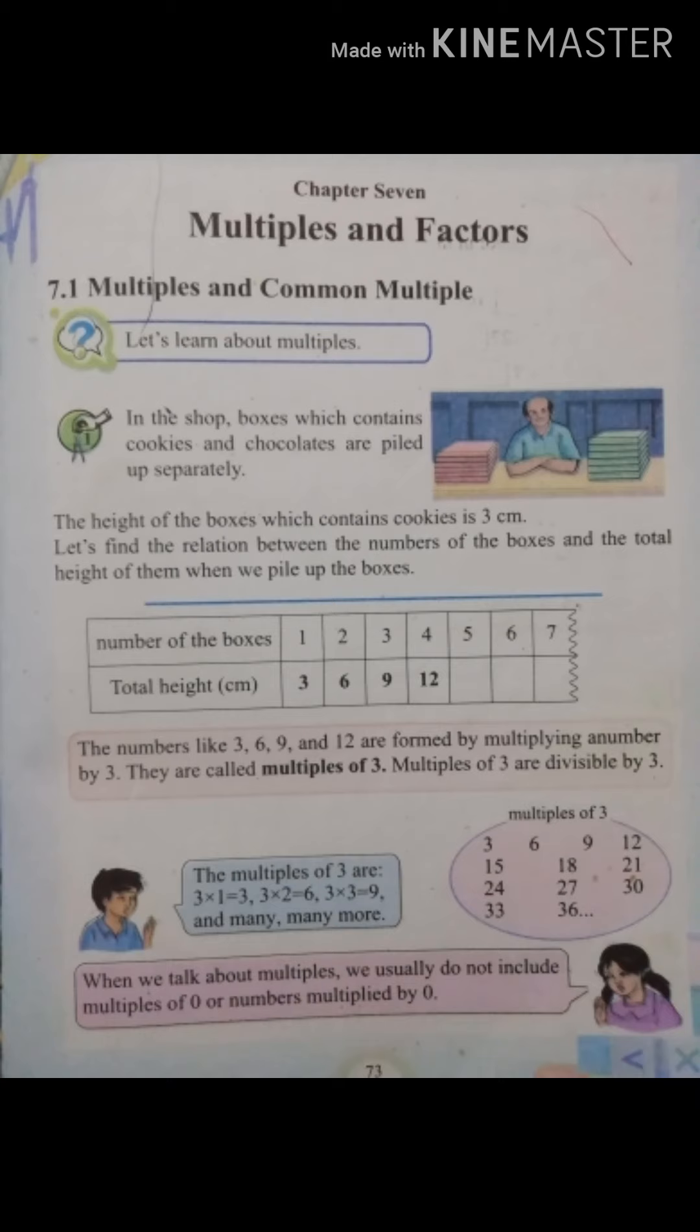Multiples of 3 are: 3, 6, 9, 12, 15, 18, 21, 24, 27, 30, 33, 36 and so on.